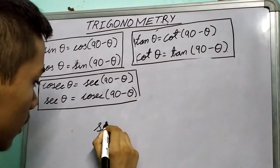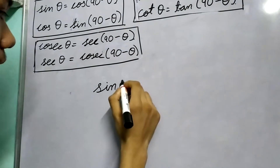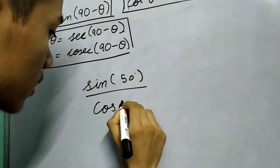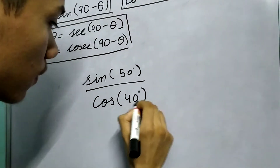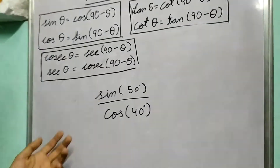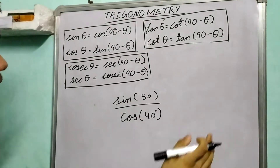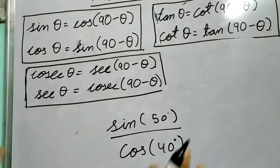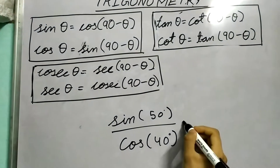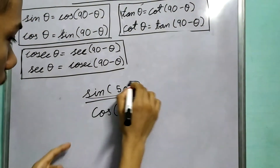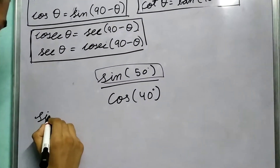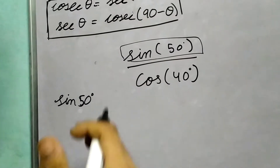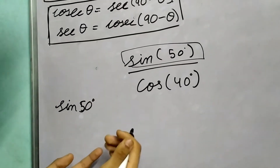Say we need to solve sin 50 degrees divided by cos 40 degrees. Now we need to solve for this and use co-function properties. So let us pick sin 50 degrees. Now what is sin 50 degrees? How can I change sin 50 degrees — how can I change its form?